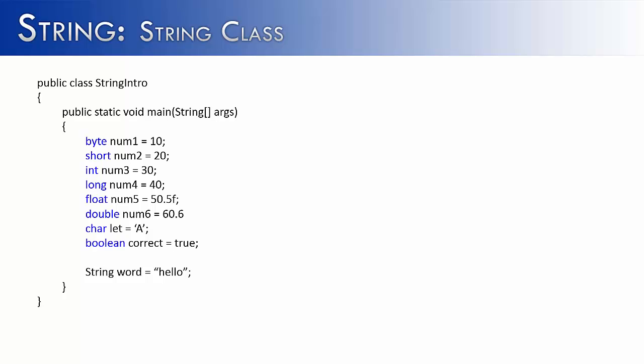We've been using strings like primitive data types because they assign like primitives. You can have something on the right side here and assign it into something on the left. But they are truly not primitives. One clue to this is the fact that string is capitalized whereas all the other primitive data types are lowercase.